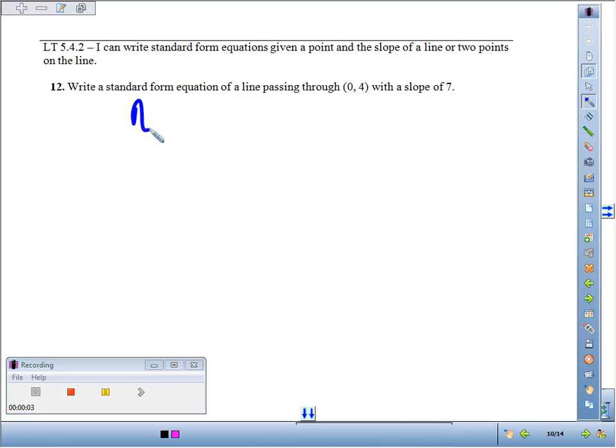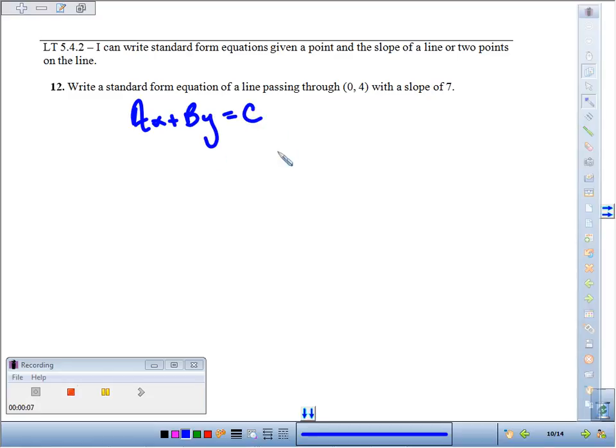Number 12, we're going to write a standard form equation. That's where we just get the x's and y's, the variables on one side of the equation and the constant terms on the other, of a line passing through (0, 4) with a slope of 7.